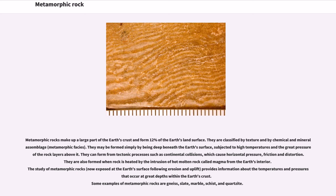Metamorphic rocks may be formed simply by being deep beneath the Earth's surface, subjected to high temperatures and the great pressure of the rock layers above. They can form from tectonic processes such as continental collisions, which cause horizontal pressure, friction and distortion. They are also formed when rock is heated by the intrusion of hot molten rock called magma from the Earth's interior. The study of metamorphic rocks, now exposed at the Earth's surface following erosion and uplift, provides information about the temperatures and pressures that occur at great depths within the Earth's crust.